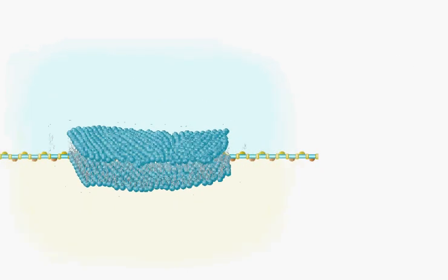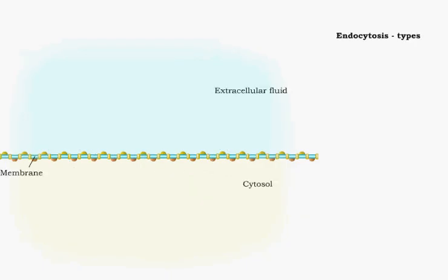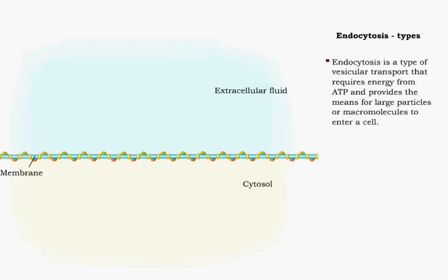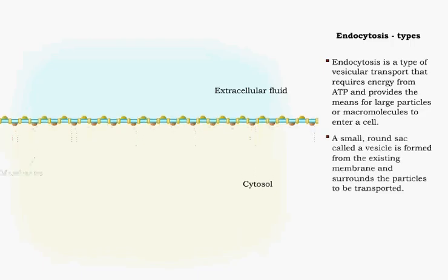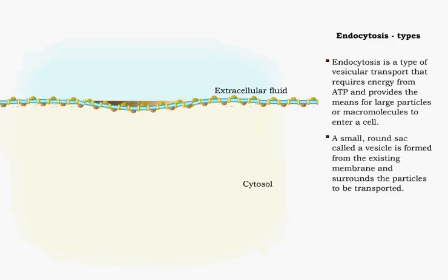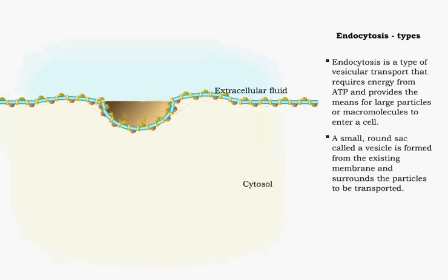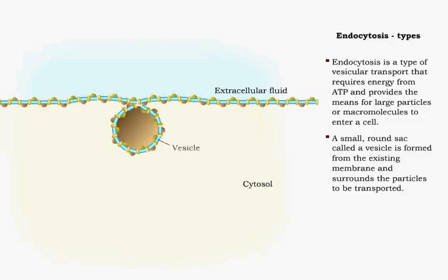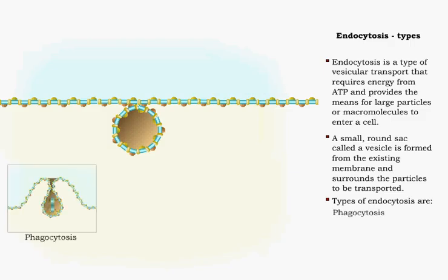Endocytosis is the movement of large particles or macromolecules into the cell. During endocytosis, a small round sac called a vesicle is formed from an existing membrane and used for transport. Three types of endocytosis are phagocytosis, pinocytosis, and receptor-mediated endocytosis.